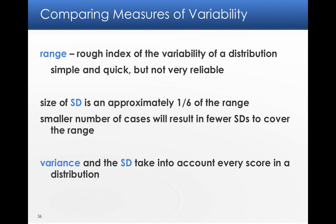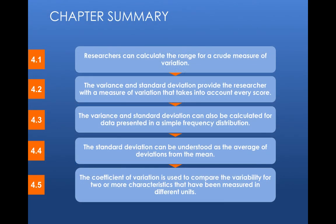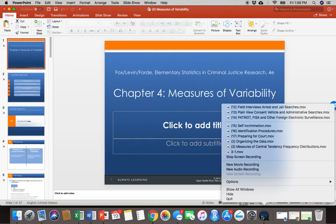Well, if we look at these measures of variability to compare them, range is a very rough number. It doesn't really tell us much. So again, remember if our scores range from 40 to 90, the range is 50. But what does that mean? The size of a standard deviation is about one-sixth of the range. Smaller number of cases should result in fewer standard deviations to cover the range. Variants in standard deviation take into account every score in the distribution. And we'll spend some more time talking about this when we get into this material in the lab.